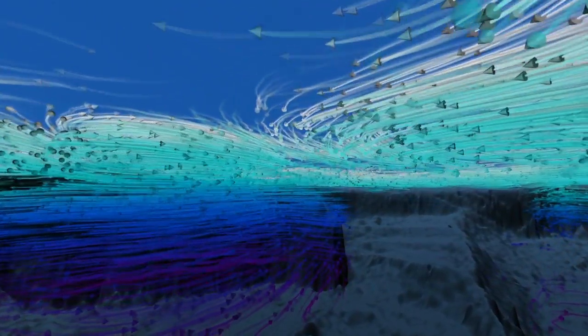Below the surface, they mix with cold, deep currents that swirl around undersea ledges and mountains.